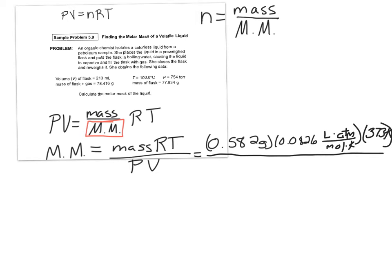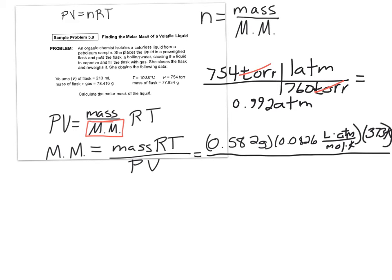Divided by our pressure. Now, notice they gave our pressure in torr. They said 754 torr, and the units in our constant are atmospheres, so if these things are going to cancel out correctly, I'm going to have to convert that torr into atmospheres. So let's do that really quick. I've got 754 torr, and remember our conversion factor. There's 760 torr in one atmosphere. Torr divided by torr is going to cancel. So 754 divided by 760, I got that's equal to 0.992 atmospheres. So let me put that down here, 0.992 atmospheres.